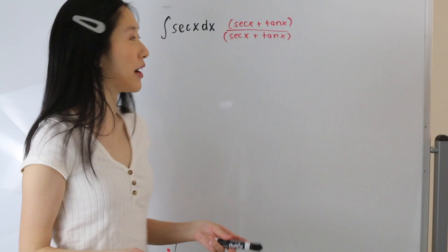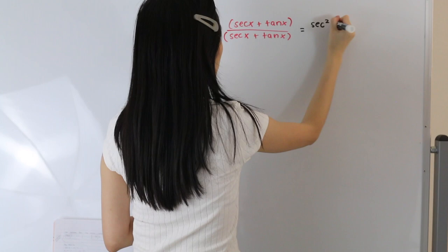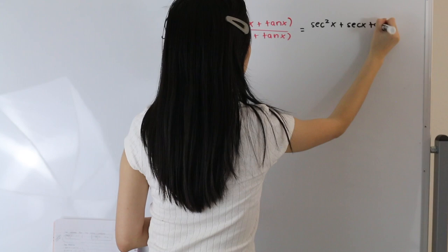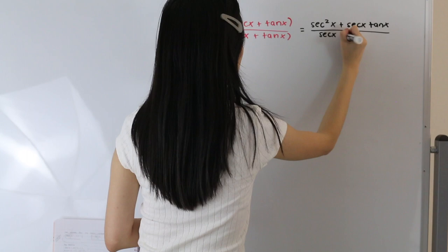So let's go ahead and multiply this out. So we are going to get secant squared of x plus secant of x tangent of x over secant of x plus tangent of x.